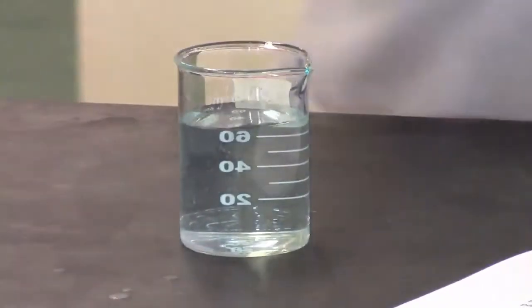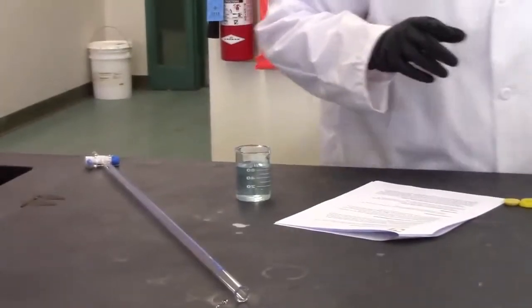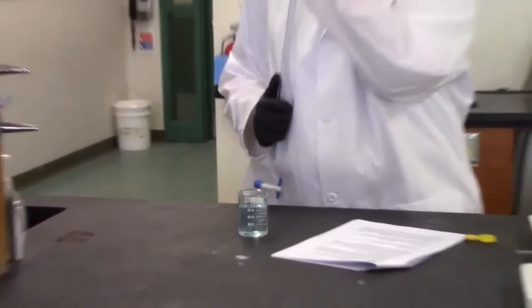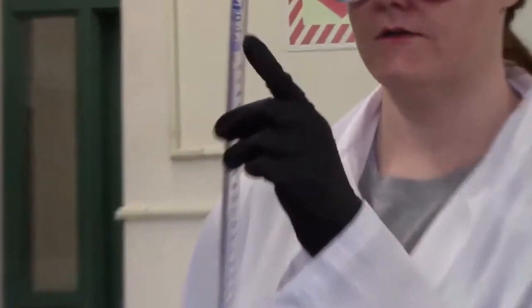A burette holds 50 milliliters, 50.00 milliliters, because it is also a class B glassware. All of that information is right at the top. It tells you the tolerance, it tells you the temperature that it was calibrated at, all kinds of info right on here.